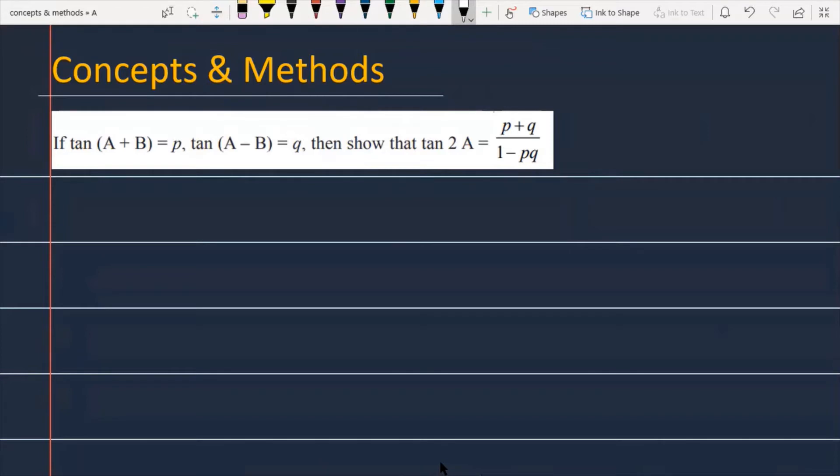If tan of A plus B is equal to P, tan of A minus B is equal to Q, then show that tan of 2A is equal to P plus Q over 1 minus PQ. So let's see how we will solve this problem.